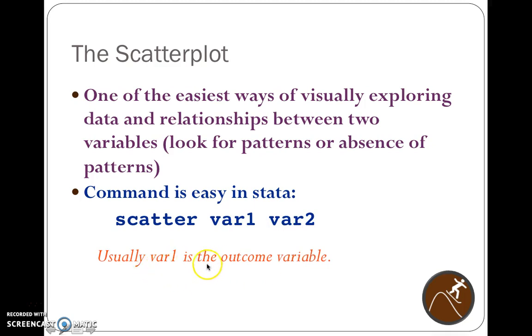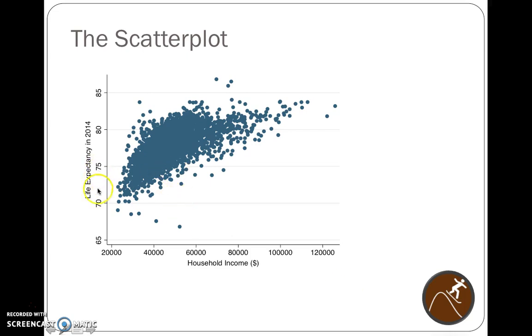So again, variable 1 is usually your outcome variable. Variable 2 would be maybe your predictor. Alright, so you want to make this graph where life expectancy is on your Y axis, household income is on the X axis. Here's the command. Scatter, if your variable was named life expect 14 and your household income data are continuous, and that's your predictor. There you go. Scatter life expect 14, household income. Hit enter and it will produce that graph.